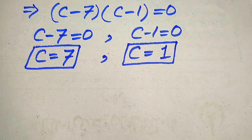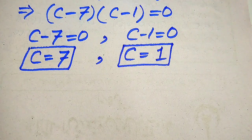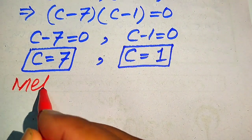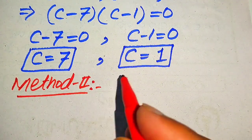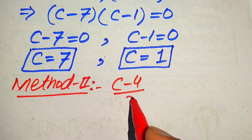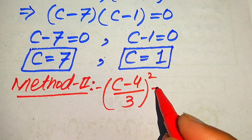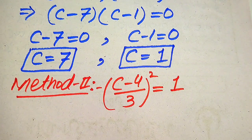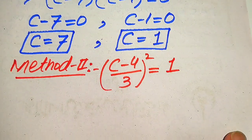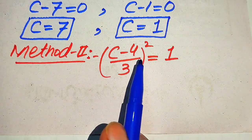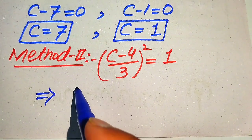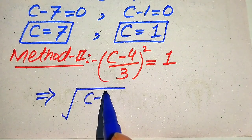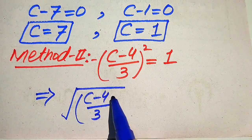Now we solve this problem using the second method. We copy down the given question statement: (C minus 4) divided by 3, whole squared, equals 1. In this method, we remove the square sign by taking the square root on both sides.